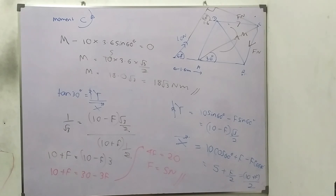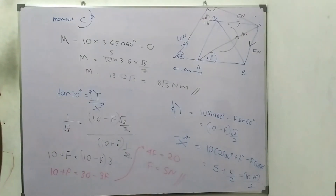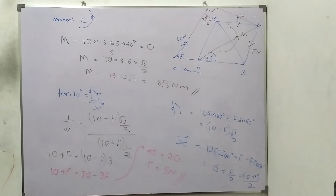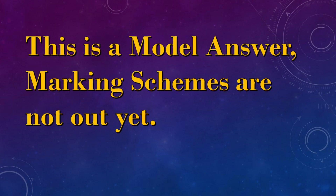So 4F equals 20, F equals 5 newtons. This is my method — there may be many methods, for example taking moment around A. Anyway they will all give the correct answer. This is the model answer; I haven't seen the marking scheme yet. So this is what I thought about the coplanar forces question in the 2020 paper. Please mention your method in the comments and we can share our knowledge. Thank you very much for watching and I will upload more videos on the 2020 paper.